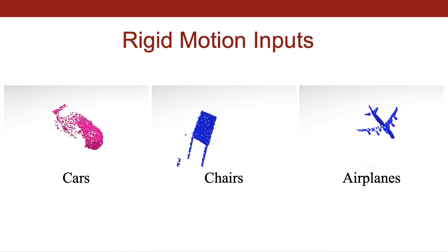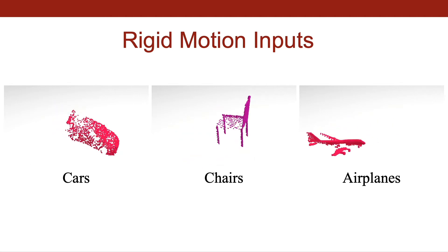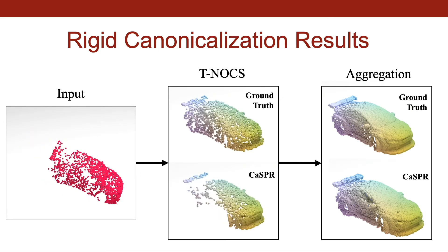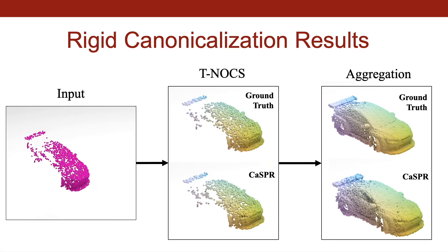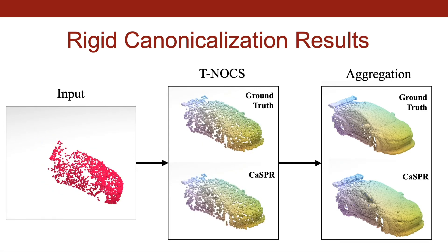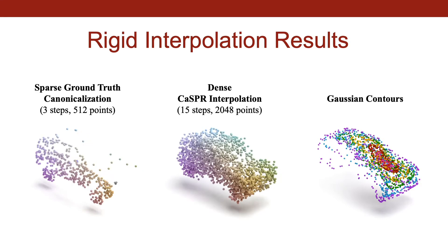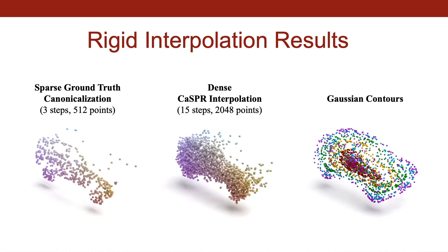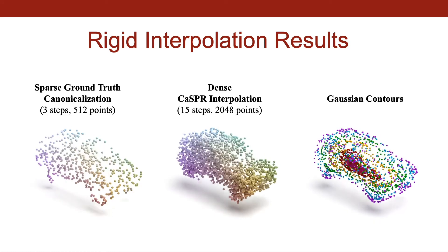We first show results on data containing dynamic rigid objects such as cars, chairs, and airplanes. Given the partial point cloud sequence on the left, CASPER canonicalizes input points to enable partial reconstruction by aggregating over all frames, as shown on the far right. The spatiotemporal representation allows interpolation of sparse inputs. Though a small number of time steps and points are given, CASPER accurately densifies in space and time by sampling from the predicted distribution shown on the right.